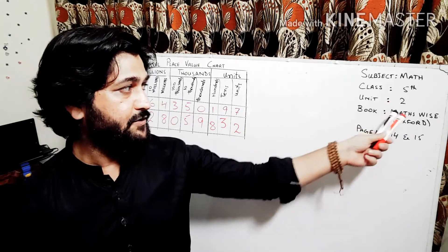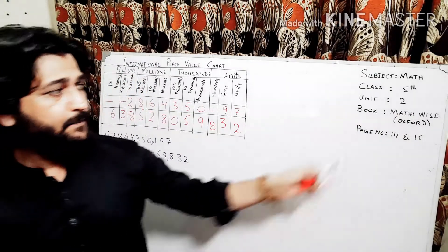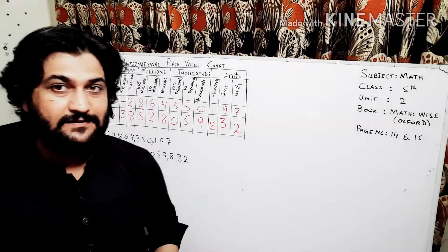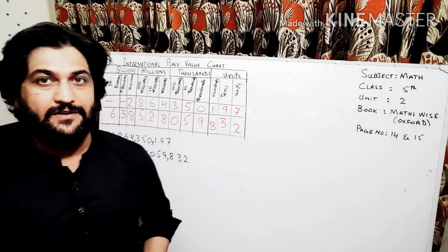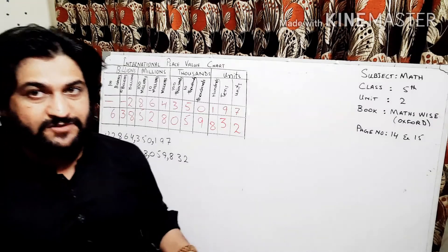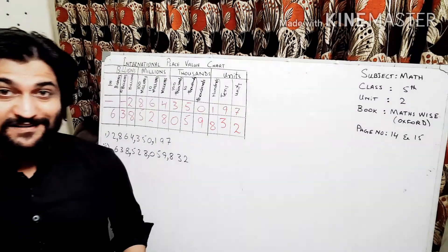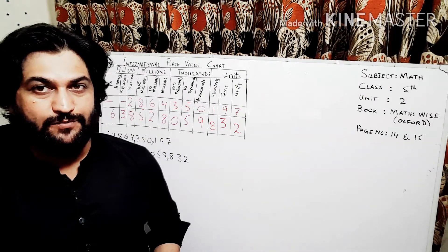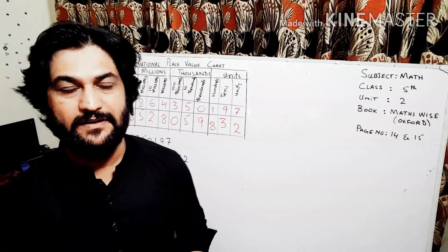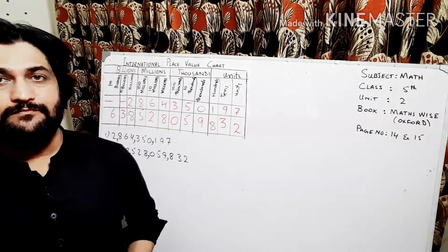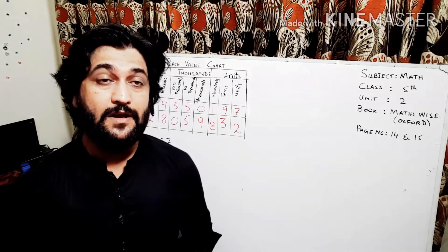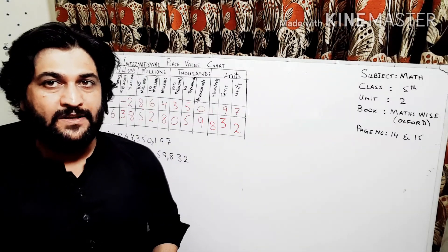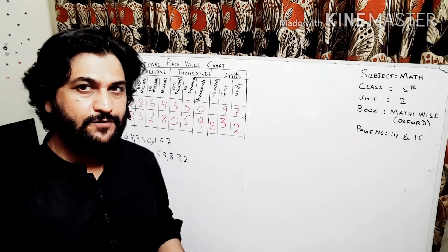Subject is math, class 5, unit 2, book Maths Wise Oxford, page number 14 and 15 you have to refer. During the exercise if you feel any difficulty you can comment me. Subscribe my channel to learn this and to watch more videos, and if you like this video please comment and press the bell icon to get more videos because so many videos are uploading. So I hope you are safe at home, goodbye.